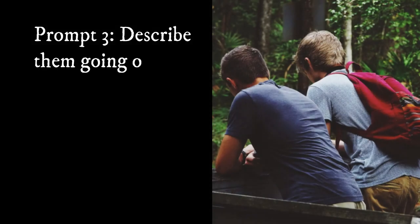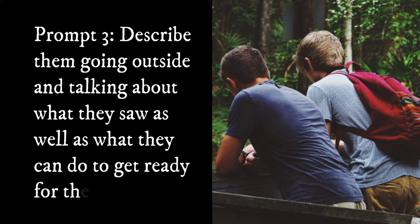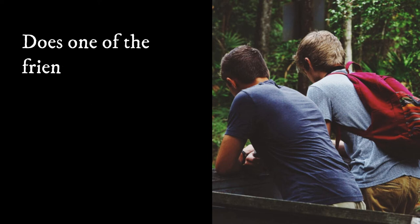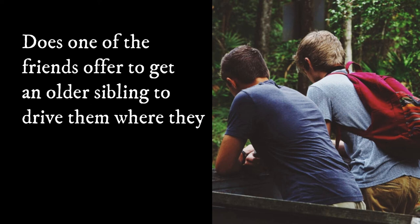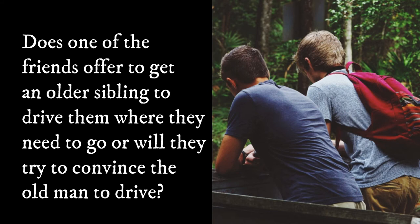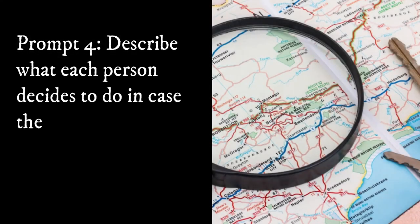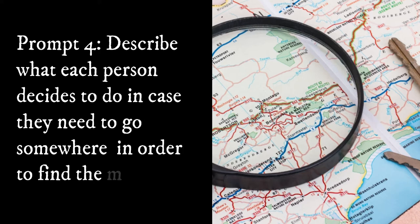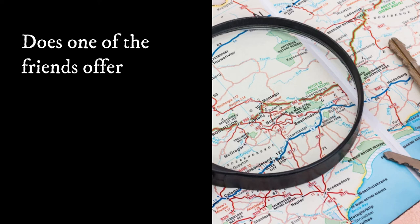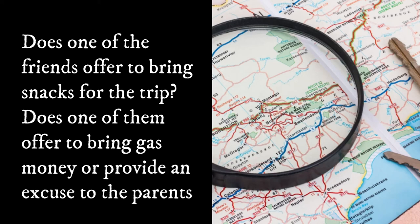Prompt 3: Describe them going outside and talking about what they saw as well as what they can do to get ready for the journey. Does one of the friends offer to get an older sibling to drive them where they need to go, or will they try to convince the old man to drive? Prompt 4: Describe what each person decides to do in case they need to go somewhere to find the mirror. Does one of their friends offer to bring snacks for the trip? Does one of them offer to bring gas money or provide an excuse to the parents?